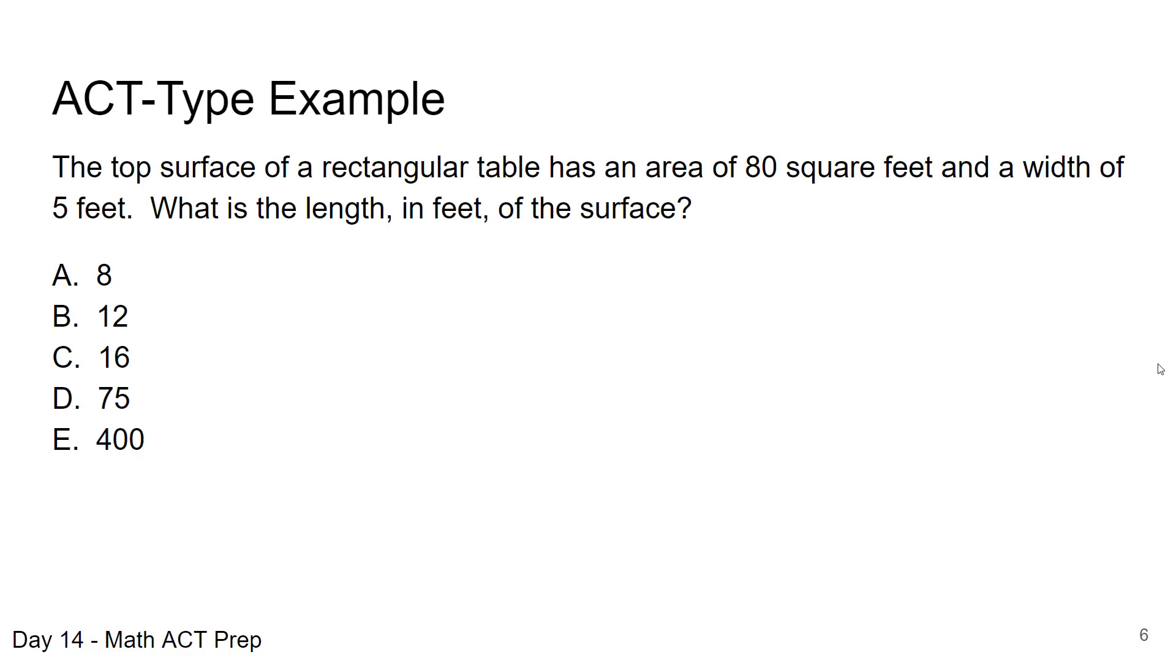Here we're given that the top surface of a rectangular table has an area of 80 square feet and a width of 5 feet. What is the length in feet of the surface? Also remember in problems like this, we want to be aware of our units. All the units here are in feet. A lot of times they don't mix up units, but they could. So just take a glance, make sure your units are good. We know we're talking about a rectangle. They give us the area and they give us the width.